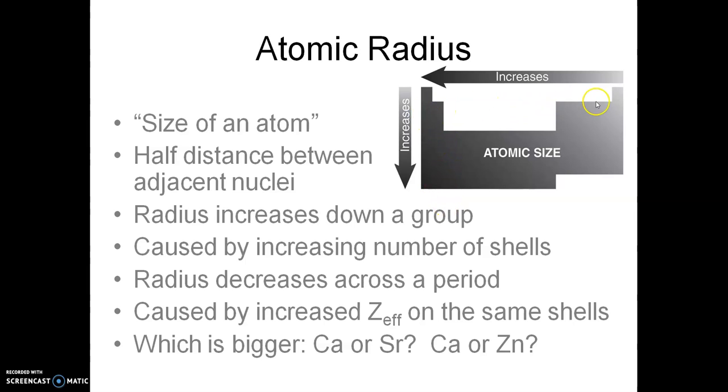As you go across a row, a period, you're in the same shell. So we're going across here, for example, we got lithium, beryllium, boron, carbon, nitrogen, over to neon. We're all in level two. So you would think they stay all the same size because level two is level two. But don't forget the effect of nuclear force is increasing. So as you go across, yes, the same shell, but that same shell is being pulled in tighter and tighter by a stronger nuclear force. And so level two shrinks as you go across that period. Go down to period three. Now we're in level three. It's bigger. Go across period three, that shell three is shrinking as you go across again.